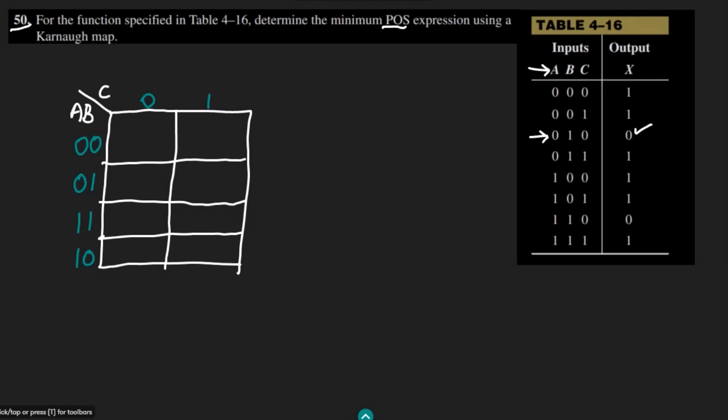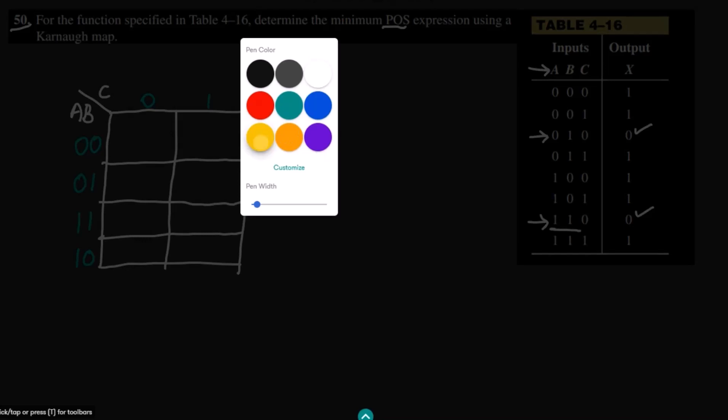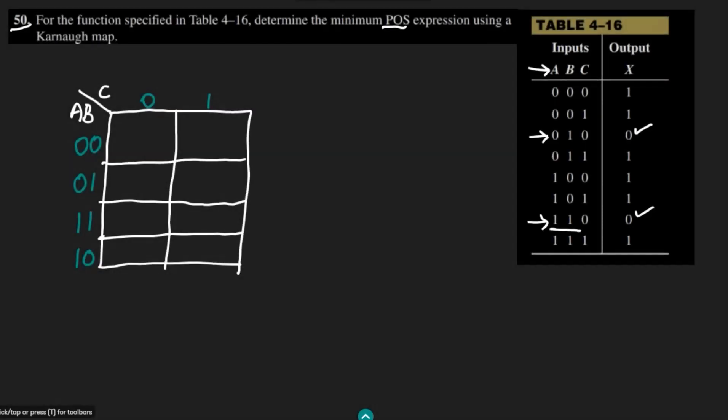...in which I have got the 0. These are basically the two inputs for which the output is 0: 010 and 110. Let me write 0 for them. So 010 is here, writing 0 for this combination. Similarly, 110 is here, and writing 0 for this as well.